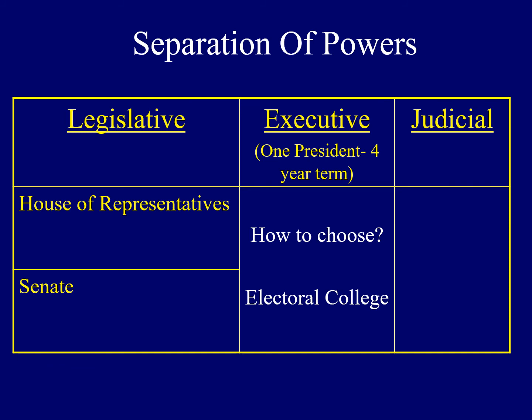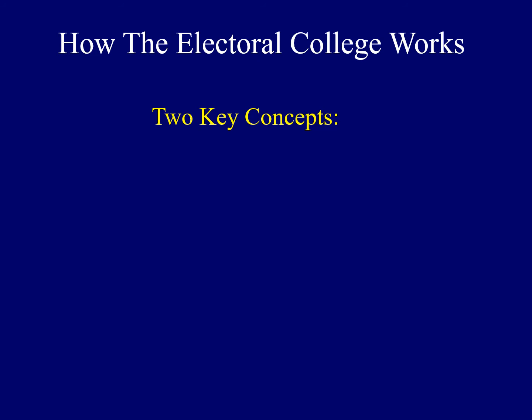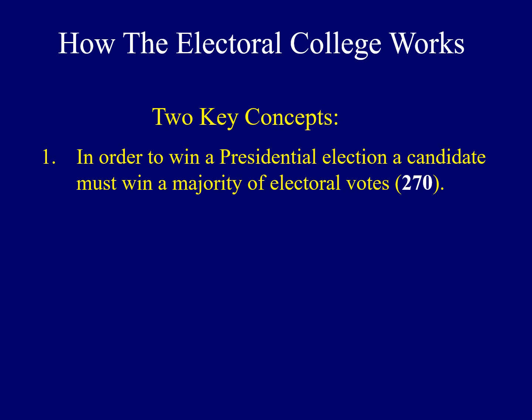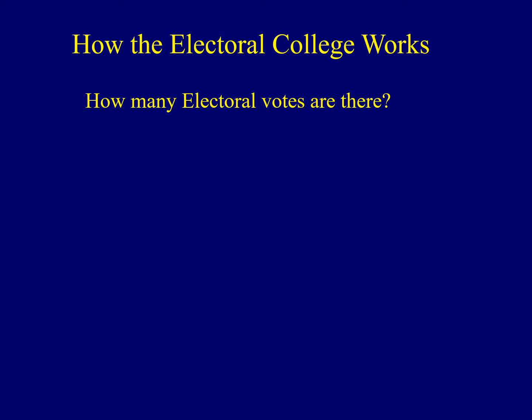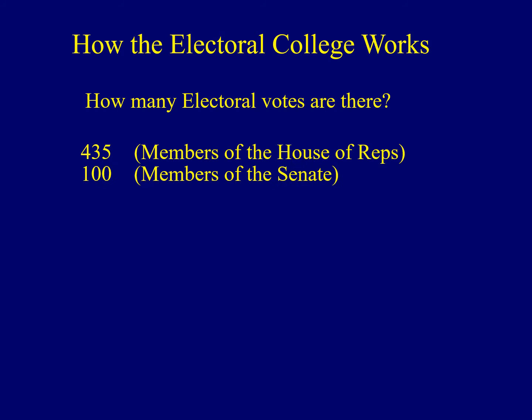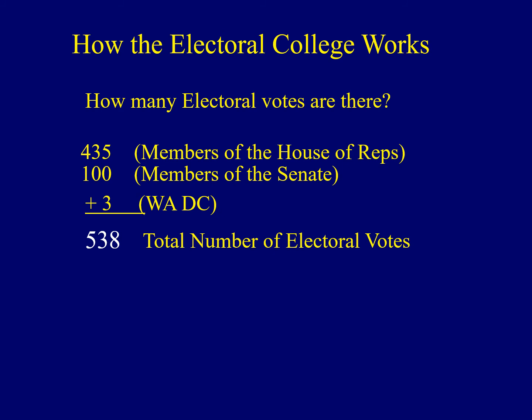There are two key concepts when explaining how the Electoral College works. First, in order to win a presidential election, a candidate must win a majority of electoral votes. The magic number these days is 270. We start with 435 — the number of members of the House of Representatives — then add 100, the total number of members of the Senate, then add 3, because Washington D.C. is not a state but is treated like one in a presidential election. The total number of electoral votes available is 538, and a majority — over half — is 270. That's where we get the number of 270 electoral votes a candidate needs to win the presidency.